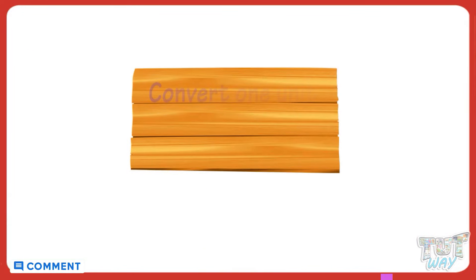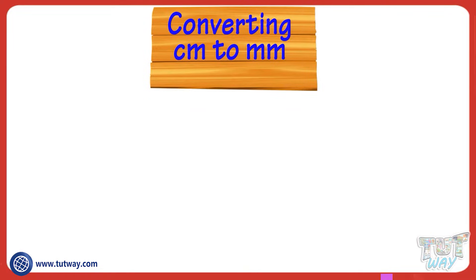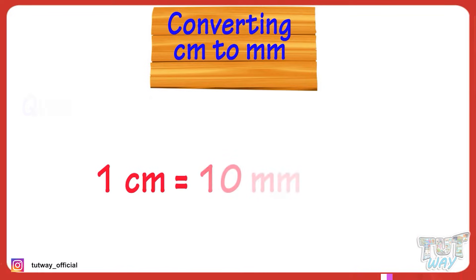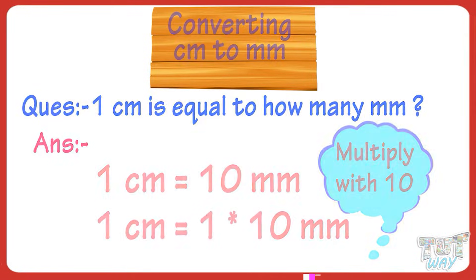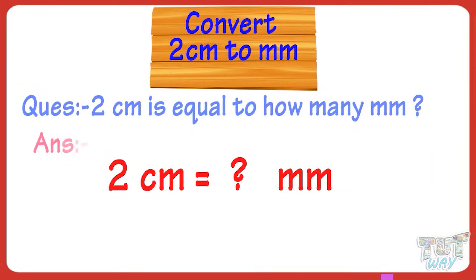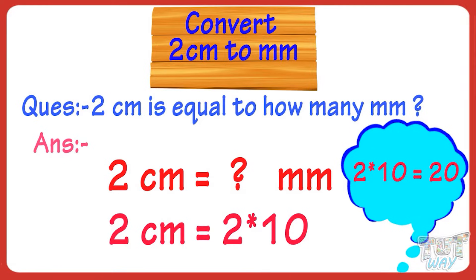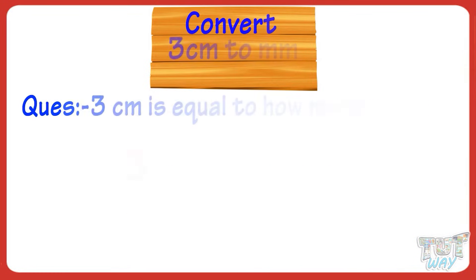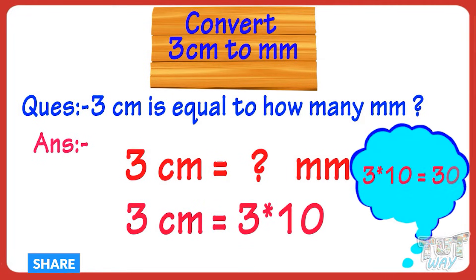Now let's learn how to convert one unit into another. Let's first learn converting centimeters to millimeters. One centimeter equals 10 millimeters, so whenever you have to convert centimeters to millimeters, you multiply by 10. Let's convert 2 centimeters to millimeters: 2 multiplied by 10 equals 20, so 2 centimeters equals 20 millimeters. Let's convert 3 centimeters: 3 multiplied by 10, we get 30, so 3 centimeters equals 30 millimeters.